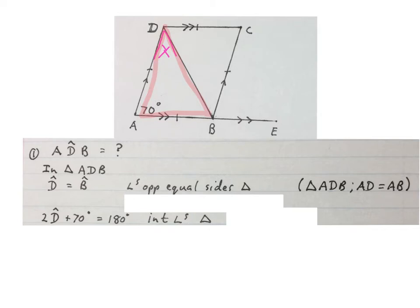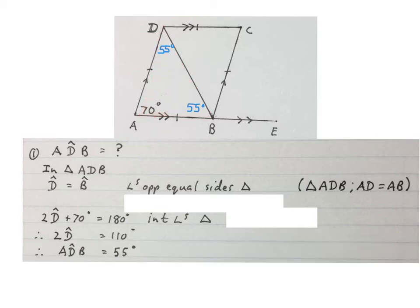We minus 70 on both sides, so 2 times angle D is 110 degrees. Now we divide by 2 on both sides, so angle ADB is equal to 55 degrees, which we fill in on the sketch. Please stop the video and look at this solution.